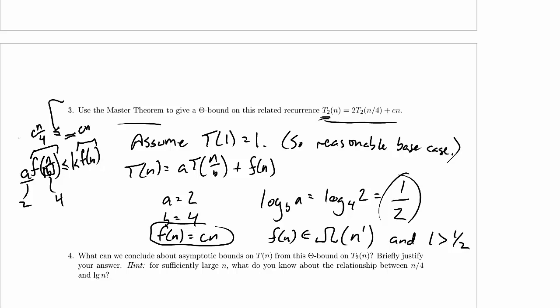We don't know what k is, but we want to fill it in with something so that this will be less than or equal to. So 2cn/4, well that's just cn/2, so one-half will work quite nicely here, and that is going to satisfy the regularity condition.